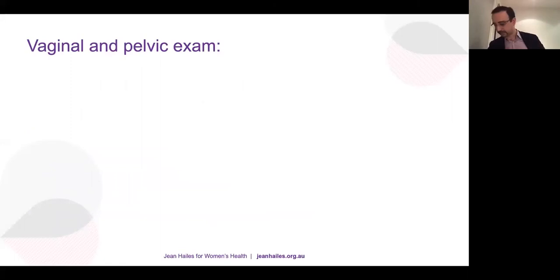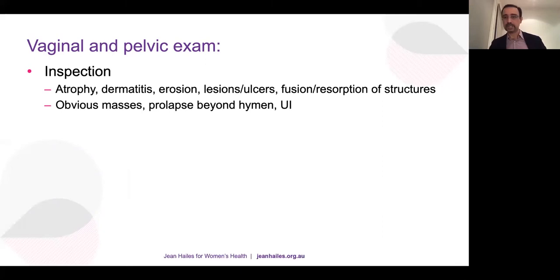One question asked: how do I do a vaginal exam? Start with inspection — look for atrophy, dermatitis, erosions, lesions, ulcer, fusion, resorption, lichen sclerosis. Look for obvious masses and prolapse beyond the introitus. I have some pictures to show — a couple may be a little sensitive, so if you have children in the background you may want to consider that.